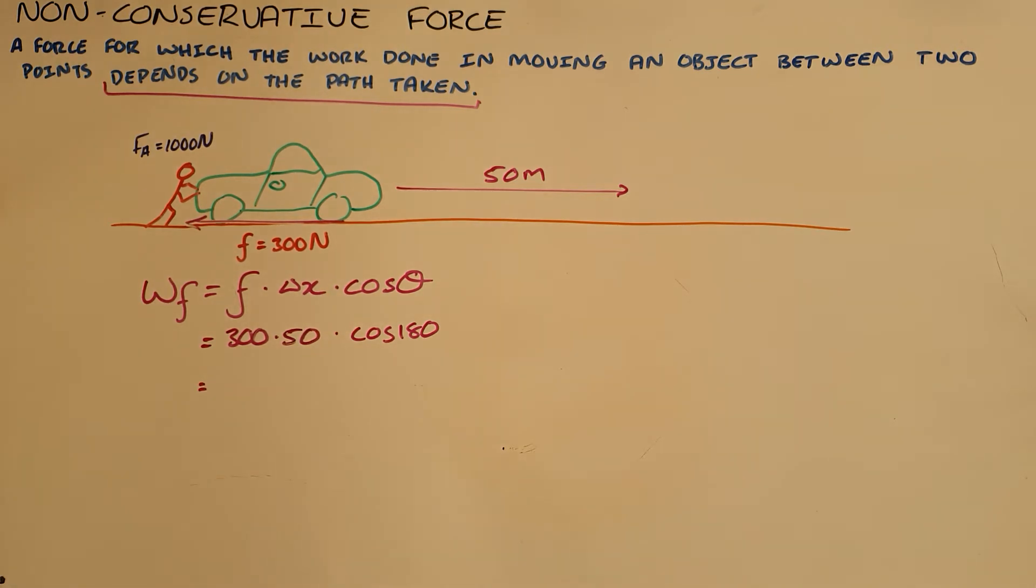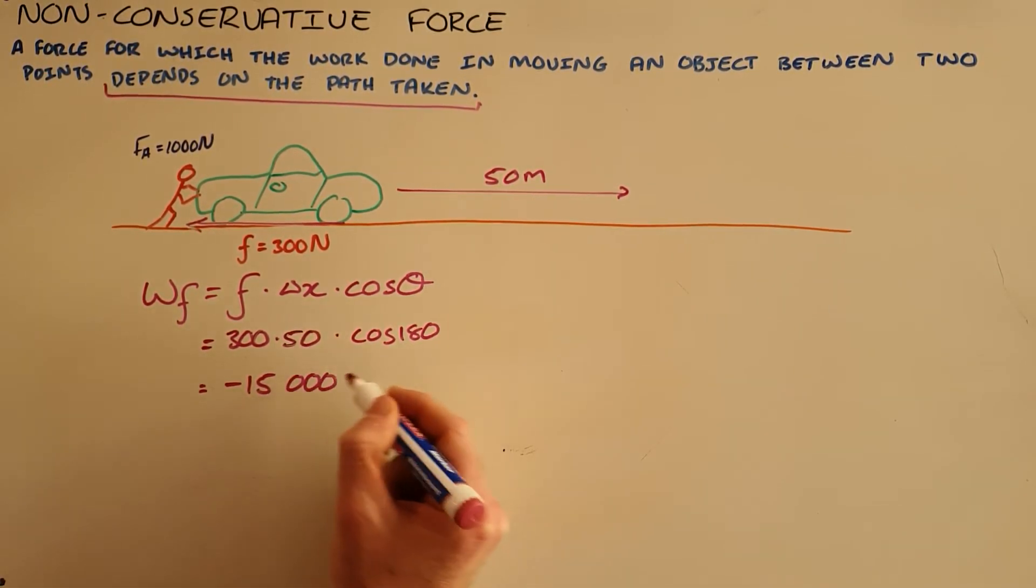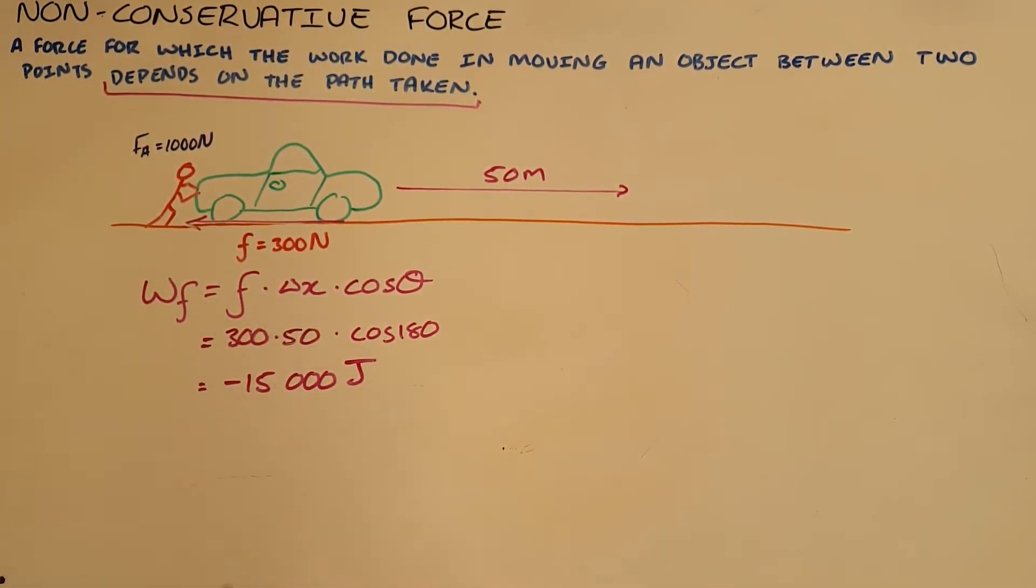What we can see here is that the total amount of work done by the frictional force is negative 15,000 joules. What this tells us is that friction removes 15,000 joules of energy from the system.